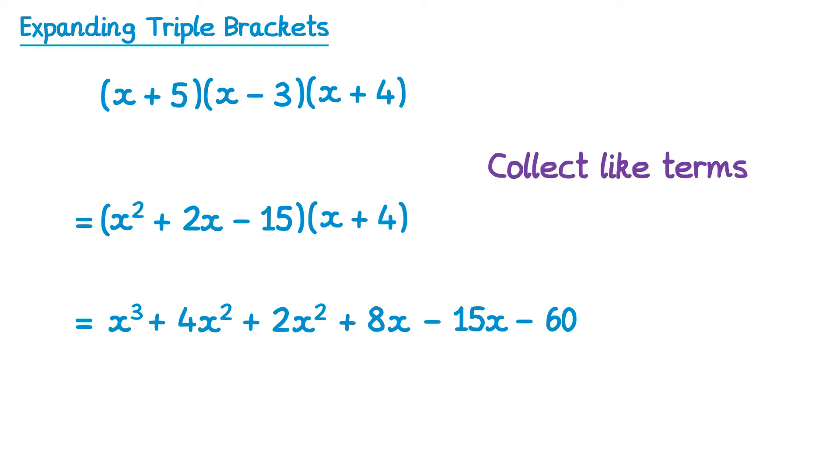The last step here is to collect like terms. So we're looking for any terms that have the same powers. x cubed doesn't, so we'll just write that by itself. We then look at these two terms here, they've both got x squared, so we've got 4x squared add 2x squared, which gives 6x squared. Then these two terms here have x, so 8x take 15x is negative 7x, and finally there's a negative 60 to write on the end.